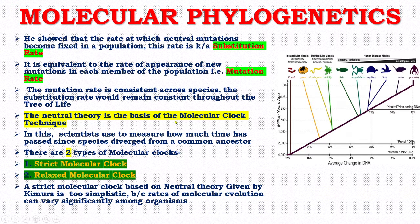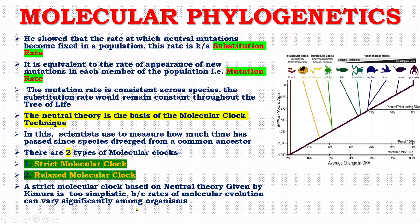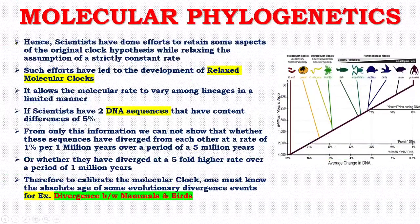The neutral theory is the basis of the molecular clock technique. In this, scientists measure how much time has passed since species diverged from a common ancestor. There are two types of molecular clocks: the strict molecular clock and the relaxed molecular clock. A strict molecular clock based on neutral theory given by Kimura is too simplistic because rates of molecular evolution can vary significantly among organisms. Therefore, scientists have made efforts to retain some aspects of the original clock hypothesis while relaxing the assumption of a strictly constant rate, leading to the development of relaxed molecular clocks.